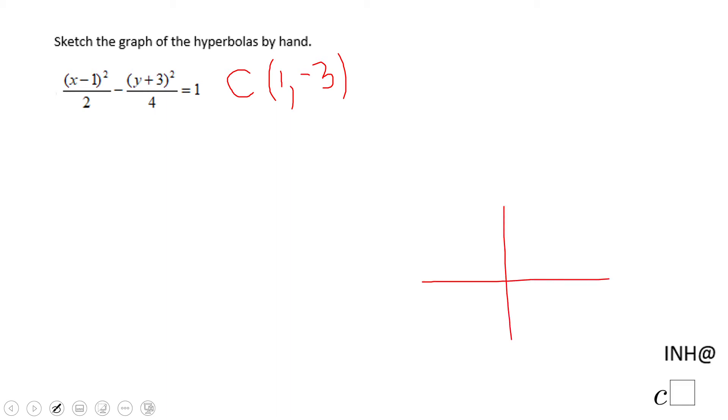So that means the center is somewhere in quadrant 4. And the next thing you will have to ask yourself is what is the focal axis here? Because we have (x-1)² minus (y+3)², something like this, that should tell you...